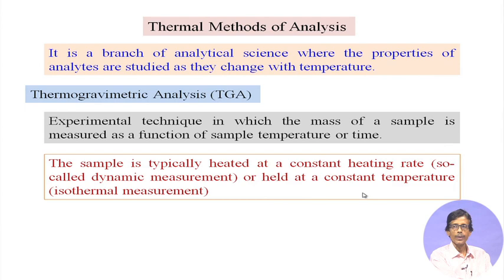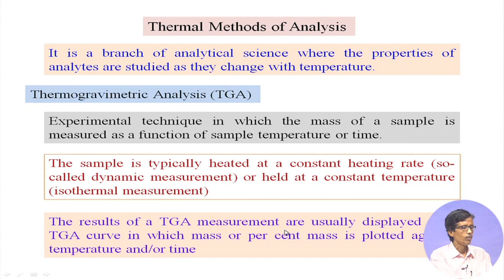Alternatively, we can hold the sample at a constant temperature — called an isothermal measurement. We can monitor the temperature rise in terms of the corresponding furnace temperature. The results of TGA measurements are usually displayed as a TGA curve — a plot monitoring the property and its change for any physical change or chemical reaction.